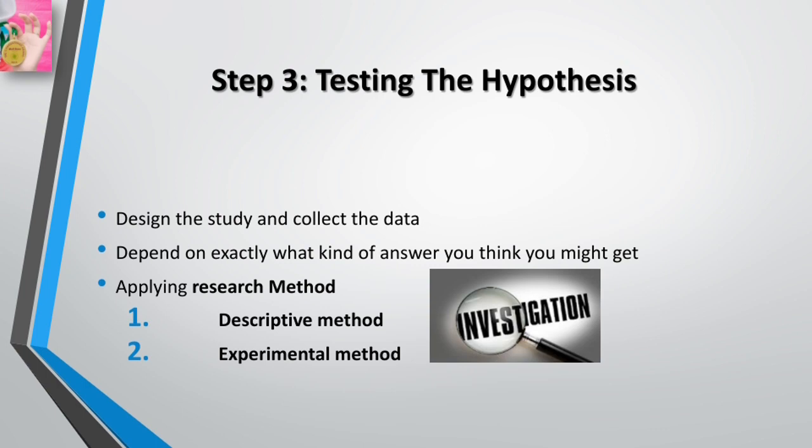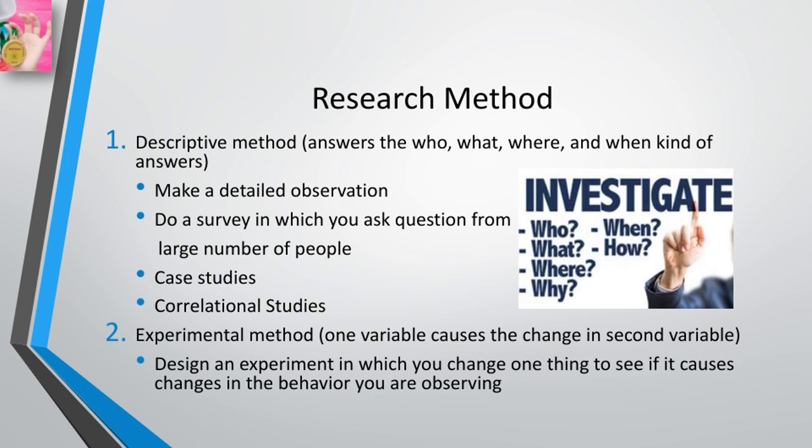This step involves deciding which research methods to use for collecting data. There are basically two categories of research methods: descriptive and experimental. Each research method answers different kinds of questions and provides different kinds of evidence. Descriptive methods are research strategies for observing and describing behavior, including identifying factors that seem to be associated with a particular phenomenon. Descriptive methods answer the who, what, where, and when kinds of questions about behavior.